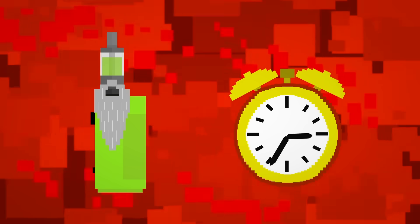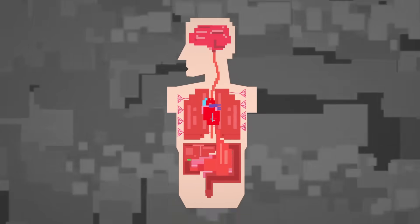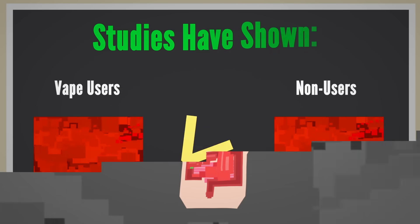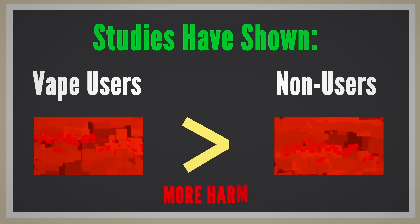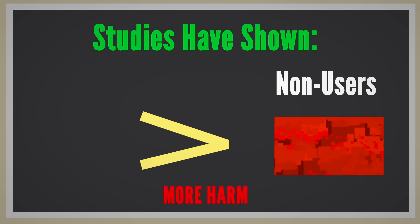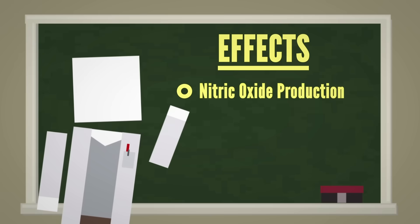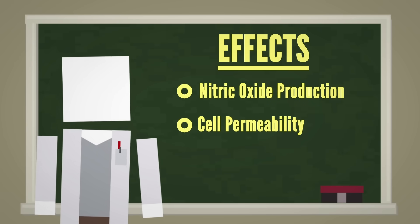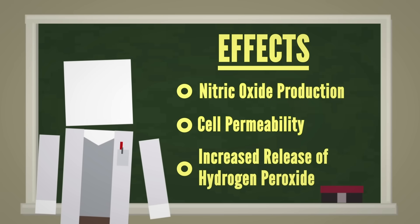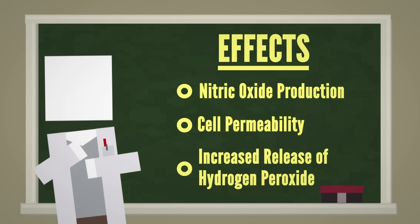Long-term vaping can damage your blood vessels, which ups your risk for cardiovascular disease. Studies have shown that vaping causes more harm to blood vessel cells compared to non-users, affecting nitric oxide production, cell permeability, and leads to an increased release of hydrogen peroxide. Yeah, all those things, not good.